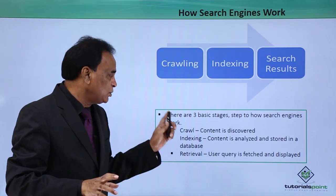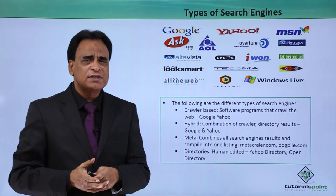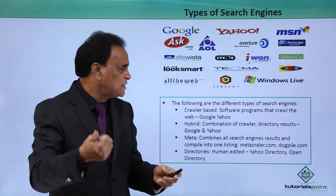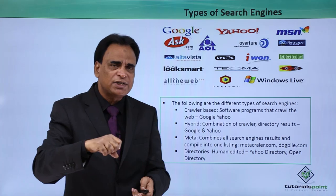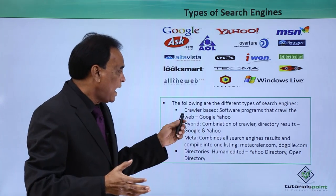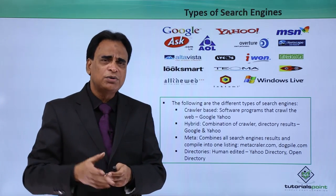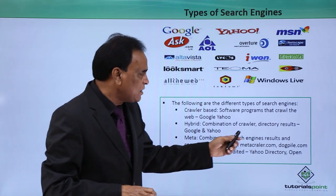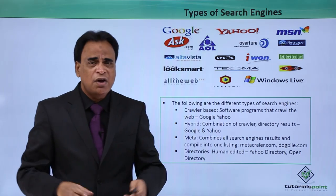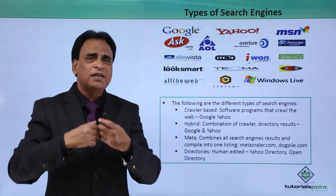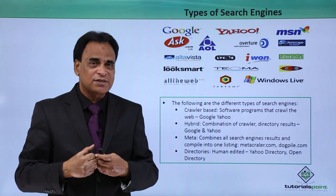These are the three basic stages search engines use: crawling, indexing, and retrieval. Now there are different types of search engines. Some are crawler-based, such as Google and Yahoo — they crawl information, index it, and retrieve it for users. There are also hybrid and directory combinations. Meta search engines combine all search engine results and compile them into one listing. Sites like MetaCrawler and Dogpile collect information from various search engines — they do not crawl themselves — and index and display that information for users.